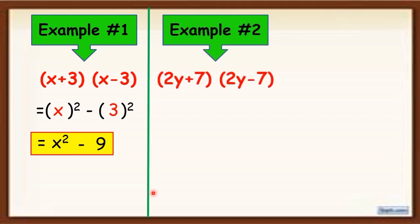Another example. (2y + 7)(2y - 7). What you are going to do? Square the first term minus square the second term.